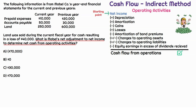We see prepaid expenses and accounts payable, which are part of changes to operating assets and operating liabilities — check mark there. Land typically is not part of the operating section — it's a long-term non-current asset. If we purchase or sell land, that goes in the investing section. However, if there is a loss or gain, that also needs to be reversed out of the operating section. The question states that land was sold for a loss of $40,000, so we'll need to address that item.